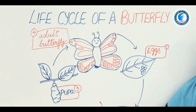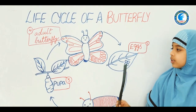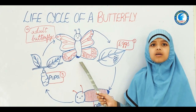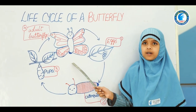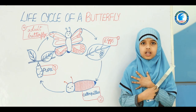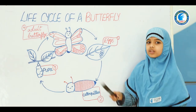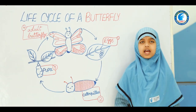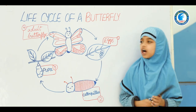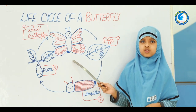At the fourth and final stage, the adult butterfly comes out of the pupa and has soft wings folded around its body. It has longer legs and two antennae. After some time, the butterfly is ready to fly.